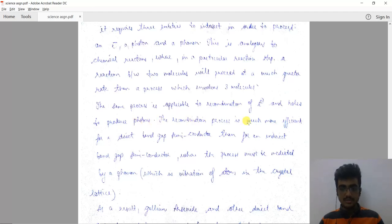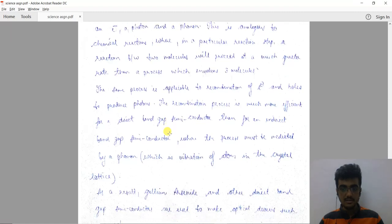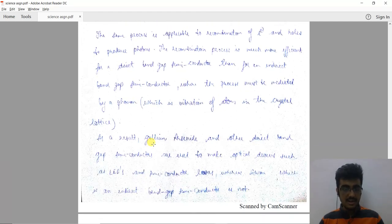The recombination process is much more efficient for a direct band gap semiconductor than for an indirect band gap, where the process must be mediated by a phonon, which is vibration of atoms in the crystal lattice.